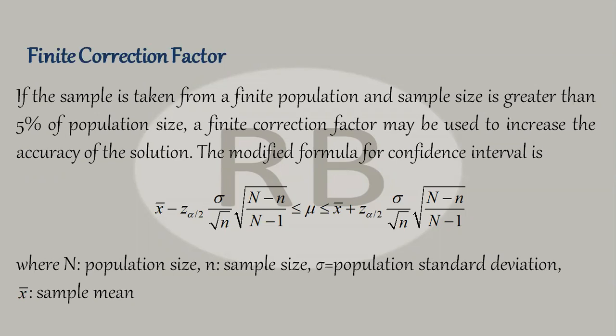When we have given the population standard deviation and sample size greater than 30, in that case how do we find the confidence interval? We have used the central limit theorem.